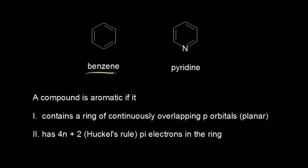In previous videos, we've already seen that benzene is aromatic because it fits the following criteria. Benzene contains a ring of continuously overlapping p orbitals. Each of the six carbons in benzene has a double bond to it, so each of those six carbons is sp2 hybridized, which means each has a free p orbital. Because benzene is a planar molecule, those p orbitals can overlap side by side, allowing delocalization of the pi electrons. Counting the pi electrons in benzene gives us 2, 4, and 6 — so 6 pi electrons fits Hückel's rule, which says the ring must have 4n+2 pi electrons. In this case, n=1, so 4×1+2 = 6.